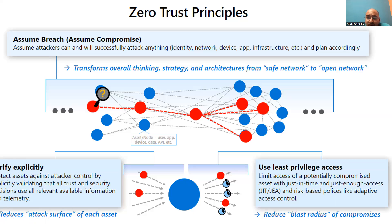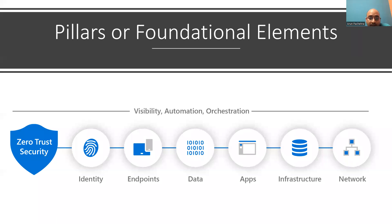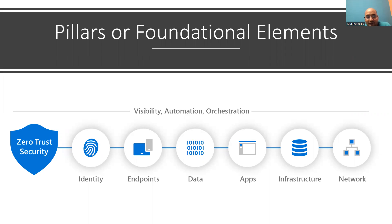We need to think of Zero Trust as an approach that should extend throughout the entire digital estate and serve as an integrated security philosophy and end-to-end strategy. This is done by implementing Zero Trust controls and technologies across six foundational elements. Each of these is a source of signal, a control plane for enforcement, and a critical resource to be defended. Let's quickly go through each one, which will cover the entire high-level overview of Zero Trust.